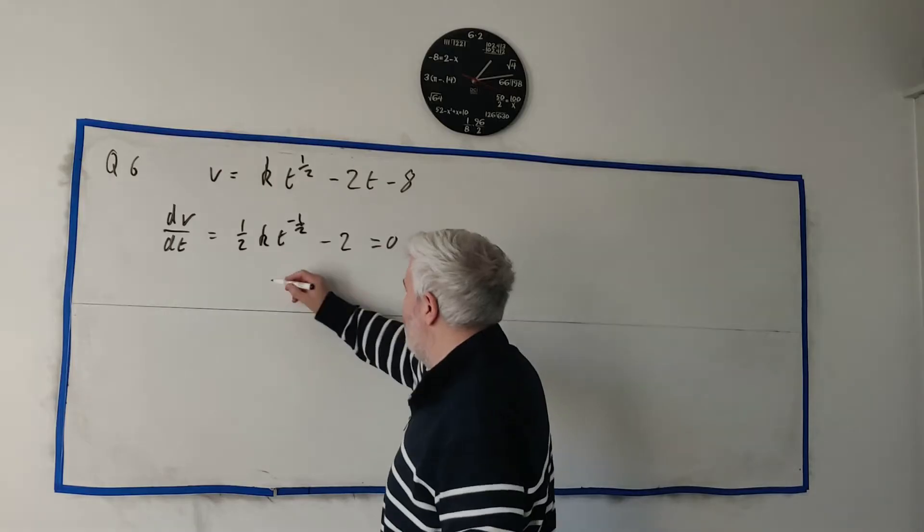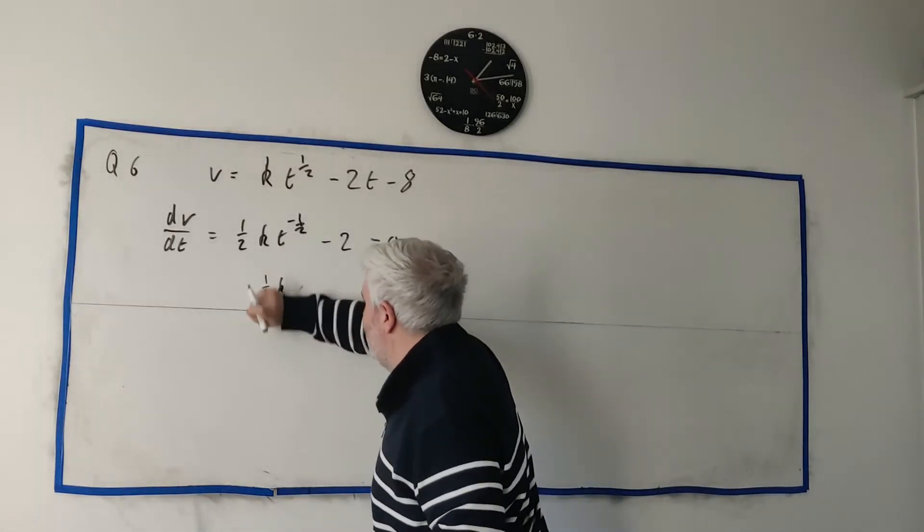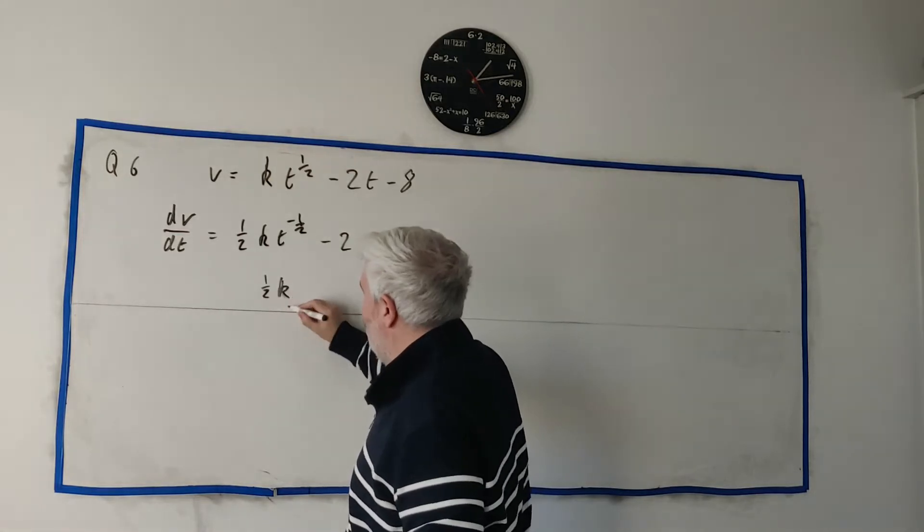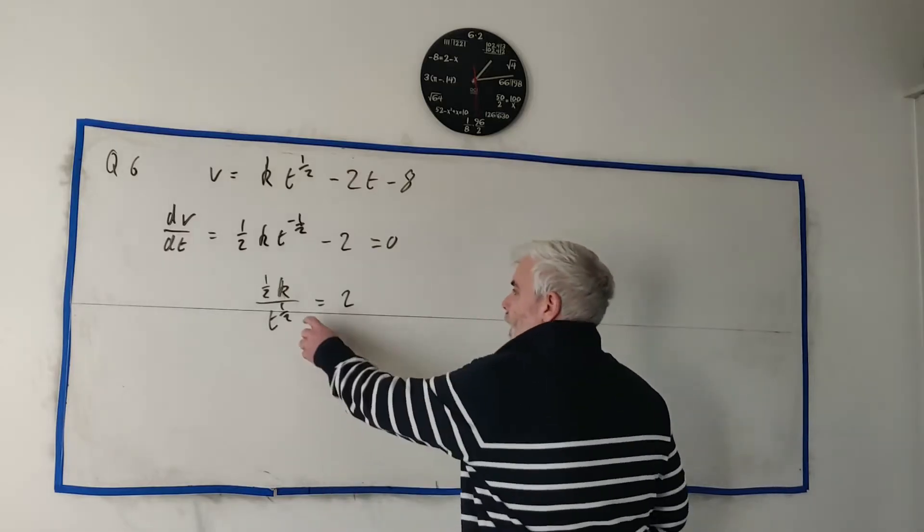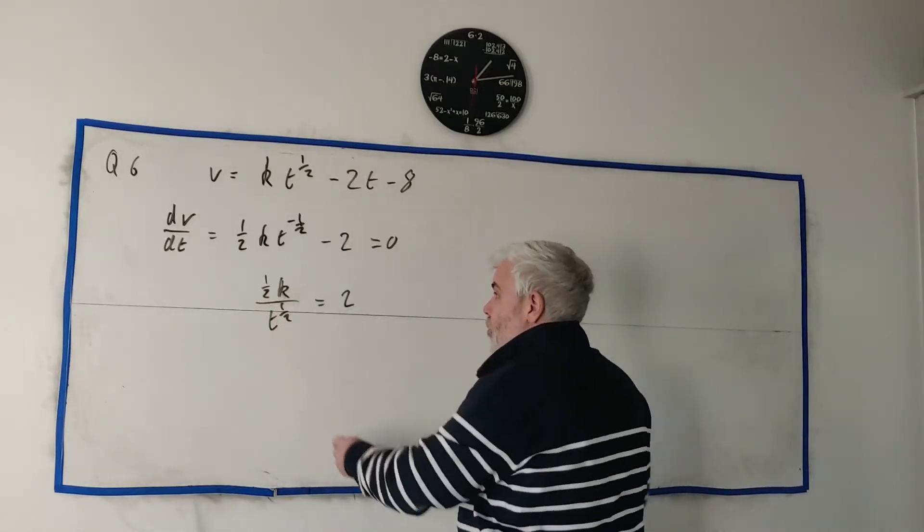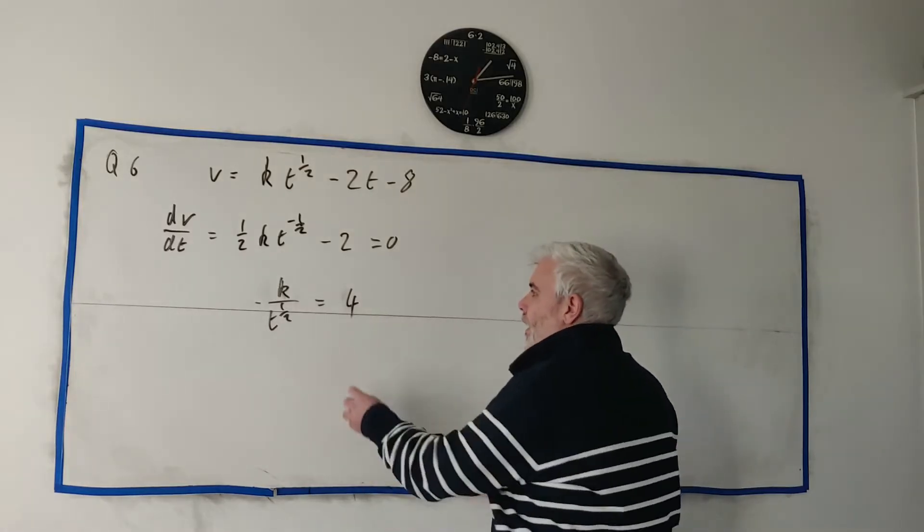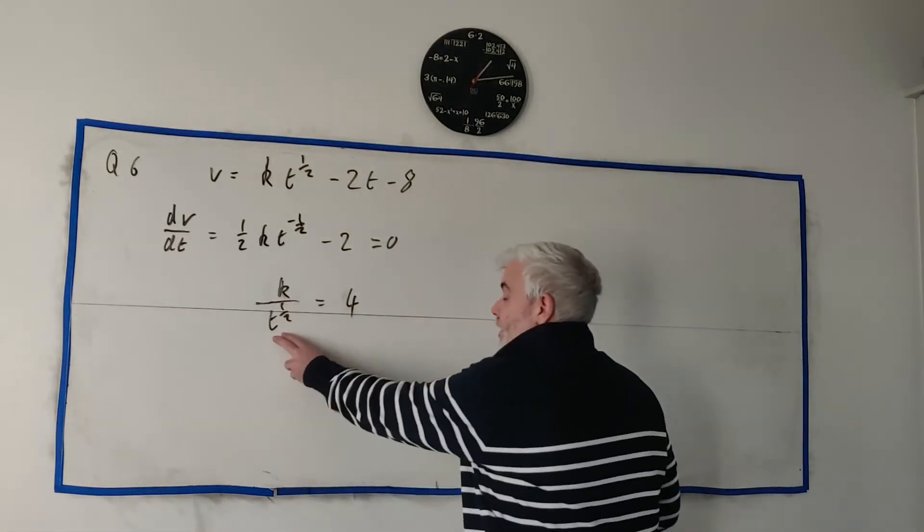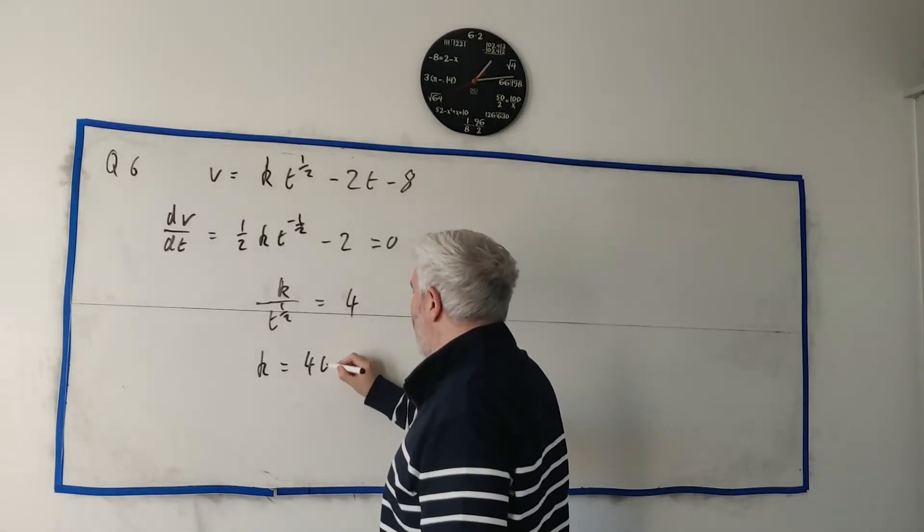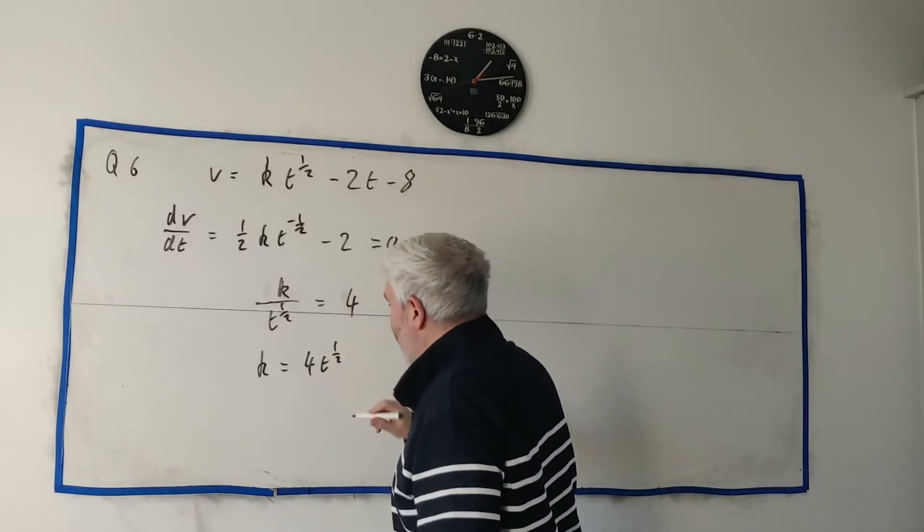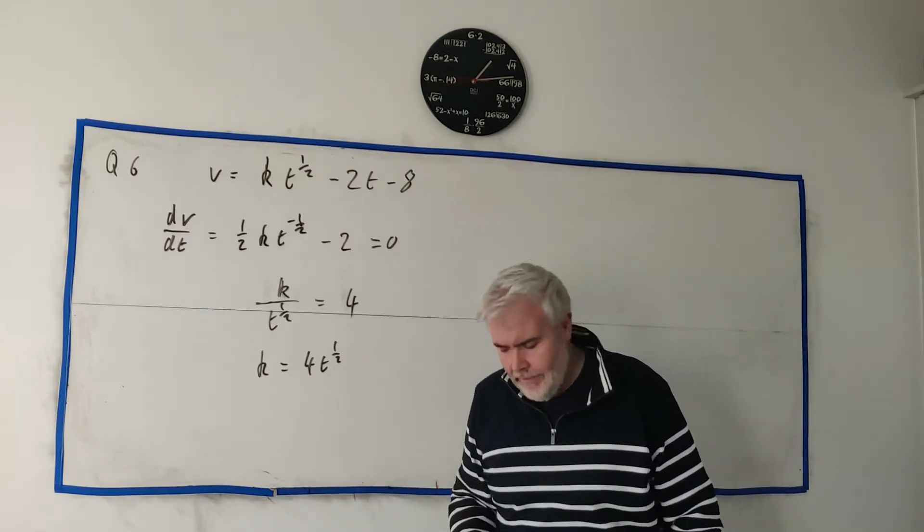The derivative of this is equal, let's see, a half k t to the minus a half, this becomes just minus two, and the minus eight disappears. This is the derivative, and we know it equals zero because they talked about a maximum. At the point we're interested in, we know this is equal zero. So we can rearrange this a bit, we'd get a half k, let's move the t to the bottom row, so a half k, the t to the power of a half's on the bottom equals two.